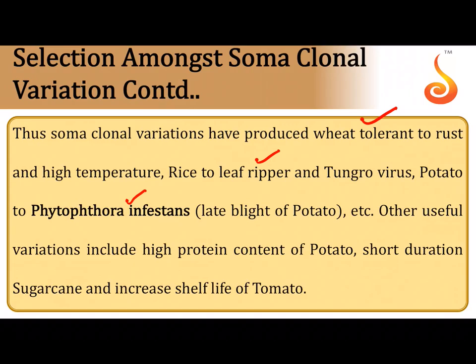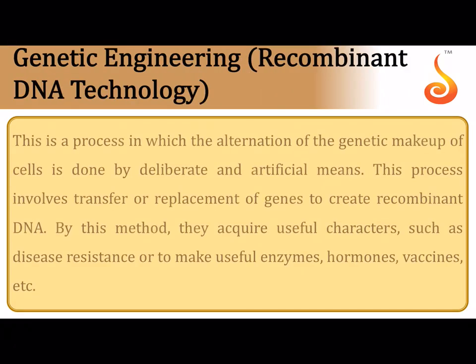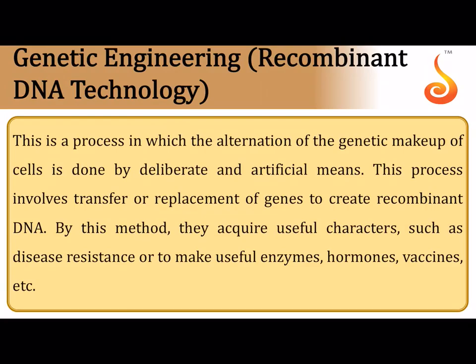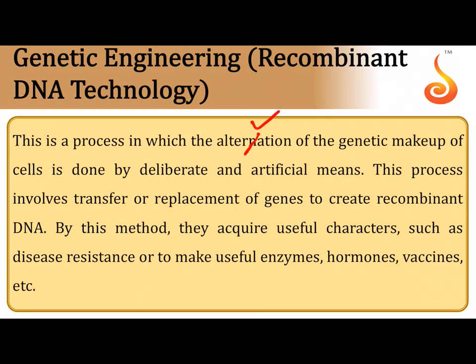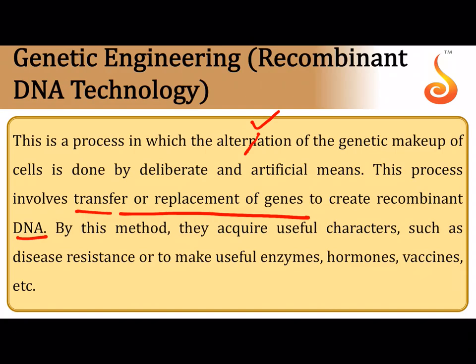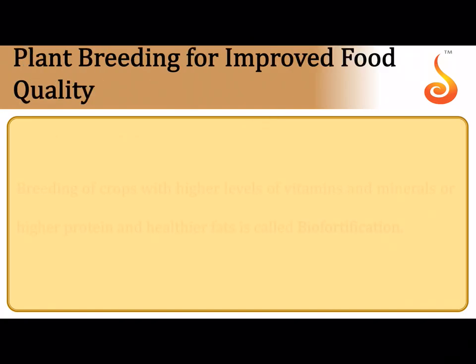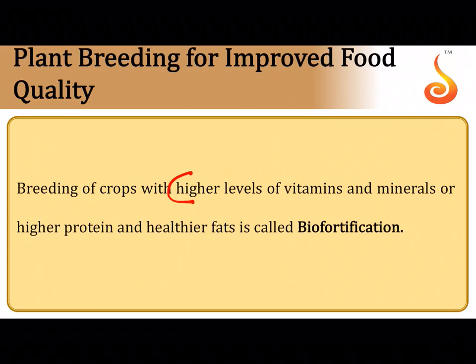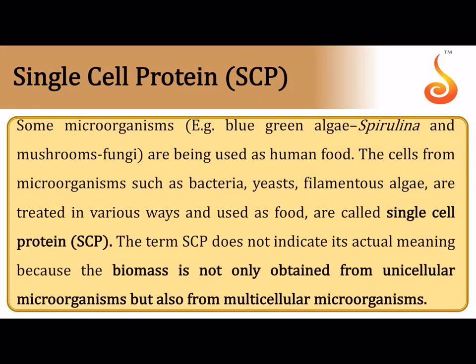Genetic engineering can also alter plant genetic makeup to create recombinant DNA, transferring desirable genes into plant cells — as seen with Bt toxin genes from Bacillus thuringiensis introduced into plants. Biofortification refers to breeding crops with higher levels of vitamins and minerals. Single cell protein (SCP) refers to growing microorganisms such as bacteria, yeast, and filamentous algae that are rich in protein for use as human food.